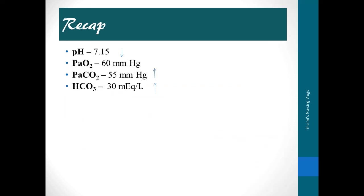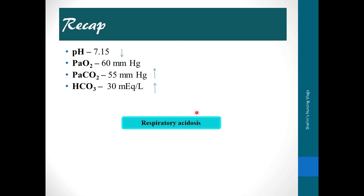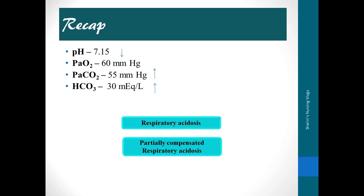For a recap, consider this scenario: an 80-year-old man presents with chest tightness and difficulty breathing, has been a chronic smoker for 50 years, and is a known case of COPD. His ABG shows: pH 7.15 (reduced), PaO2 60 mmHg (low), PaCO2 55 mmHg (elevated), and bicarbonate 30 mEq/L (elevated). The direction of defect is opposite, so it is respiratory; pH is below 7.35, so it is respiratory acidosis. The elevated bicarbonate indicates renal reabsorption of base — some compensation is occurring — but pH is still low, so this is partially compensated respiratory acidosis.